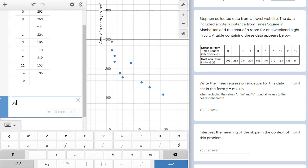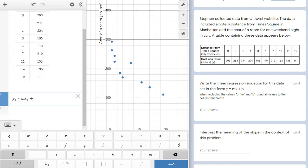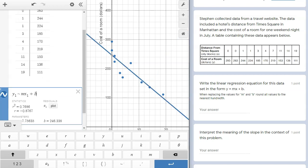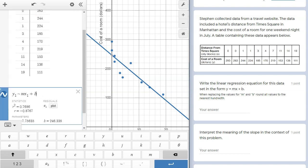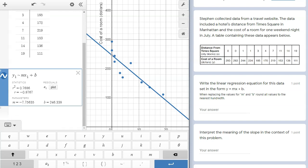On line two, I'm going to type y1 tilde mx1 plus b. The y1 and the x1 reference the data in the table above. The tilde indicates to Desmos that I would like the calculator to generate the equation for me. Below that, we immediately get the output for the data analysis. In the parameters section, I'm given a slope m and a y-intercept b. For this equation, that will be y equals negative 7.76x plus 246.34.